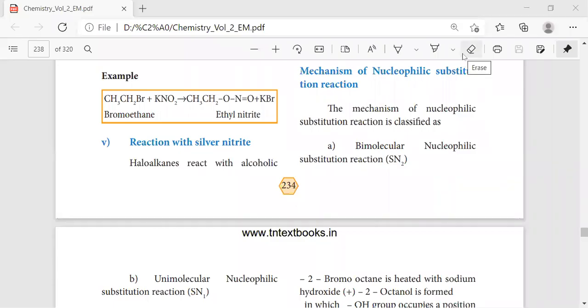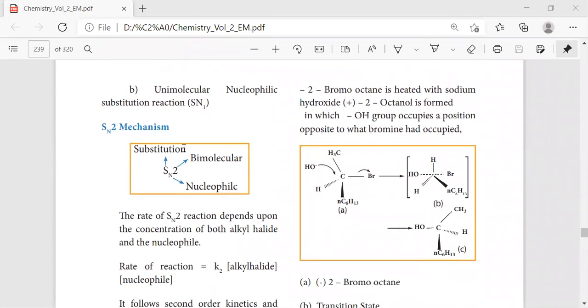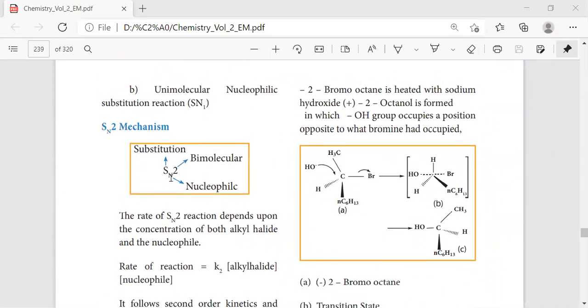Now we'll move on to the mechanism of nucleophilic substitution reaction. Nucleophilic substitution reactions can be unimolecular or bimolecular. Bimolecular refers to two and unimolecular refers to one. We'll move on to the mechanism here. The word S refers to substitution, N means nucleophilic, 2 means bi, 1 means unimolecular.